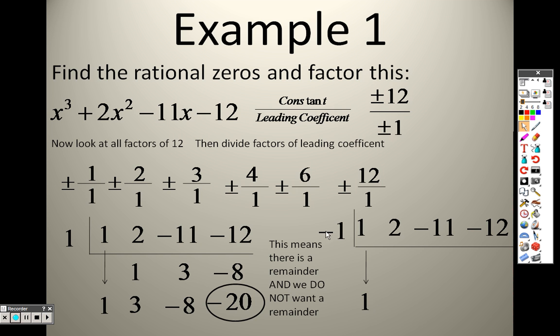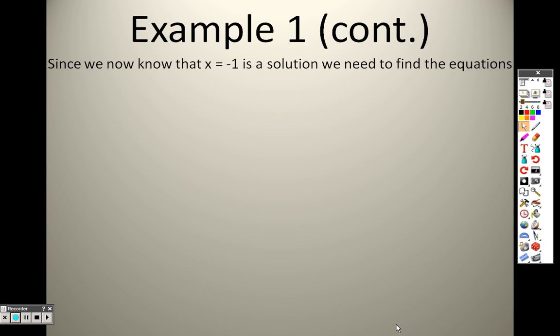So let's try out plugging in negative 1 and see what happens. Bring down a 1. 1 times negative 1 is negative 1. I add them together to get 1. 1 times negative 1 is negative 1. I add them together to get negative 12. Negative 12 times negative 1 is positive 12. I add them together to get 0. Because that's 0, that means there is no remainder, which means that I found one that works. Negative 1 works. This works.